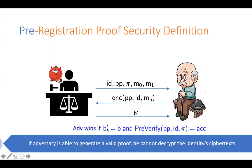The security for registered users is also quite similar. For that property, we assume a user is registered and the authority doesn't have the user's secret key. Suppose the authority is able to give a valid proof — then even though the authority himself generates the public parameters, he should not be able to decrypt the user's ciphertext. I'm not going into more details of that here.